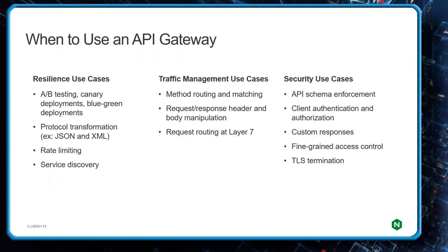When would we use an API gateway? These use cases sort into one of three verticals: resiliency use cases, traffic management use cases, and security use cases. Under resiliency we see things like A/B testing, canary deployments, blue-green deployments, and the likes. We also see protocol transformation — a typical example being if you have a legacy API that speaks SOAP, you might want to transform that to JSON bi-directionally. Policies like rate limiting and service discovery also fall here.